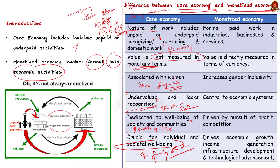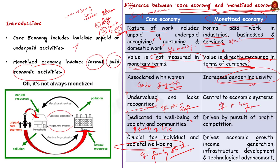Points about the monetized economy include: formal paid work in industries, businesses and services; value of work directly measured in monetary terms; increases gender inclusivity as more women participate in the formal workforce; central to economic systems with formal recognition and mostly accounted in GDP calculations; frequently driven by pursuit of profit, competition and economic expansion; and drives economic growth, income generation, infrastructure development and technological advancements.